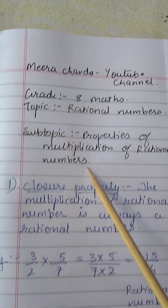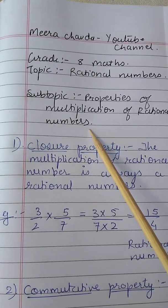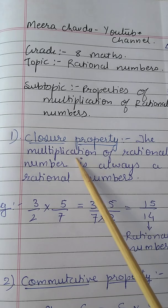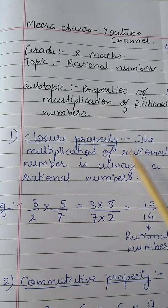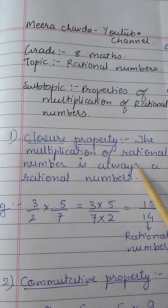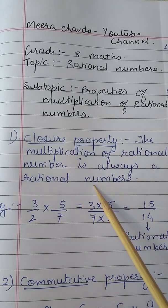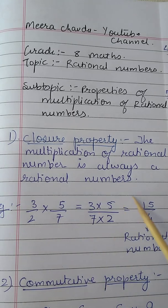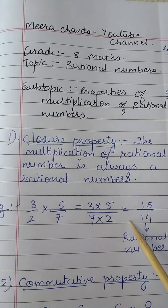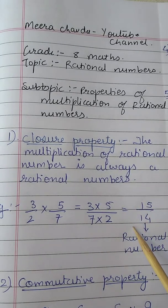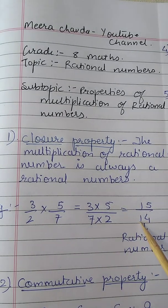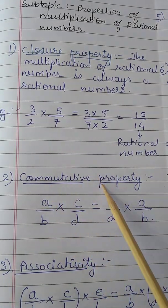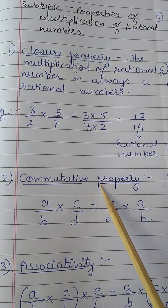First is the closure property. The multiplication of rational numbers is always a rational number — when two rational numbers are multiplied, the number you get is always a rational number. Next property is commutative property.